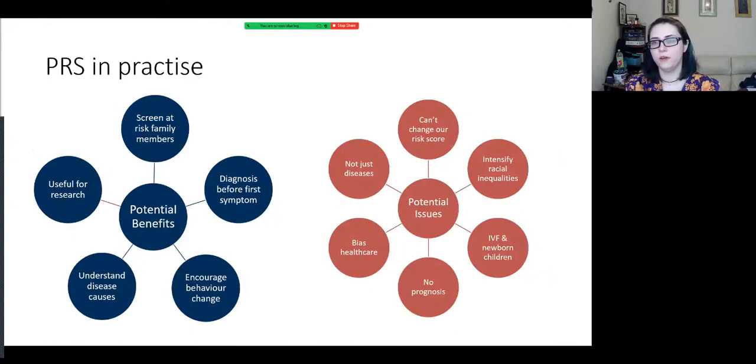We're starting to see polygenic risk scores more and more in clinical practice, as well as in research. There are lots of potential benefits to this area of research. There's a chance that you could get diagnosed with something before you start having symptoms, so that rather than the concept we have at the moment of you get ill and then we treat it and you get somewhat better, perhaps we could preemptively manage things so that you never actually get to the point of getting ill and having the problems associated with the disease. Similarly, if you know you're at high risk for particular things, you might be able to change how you're behaving now to lower your risk in other ways.